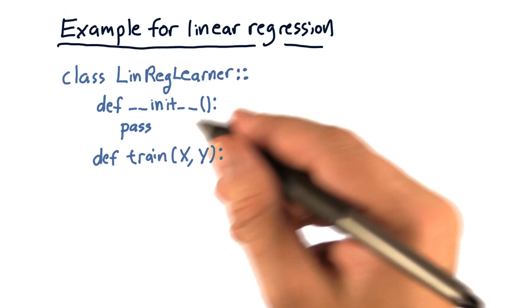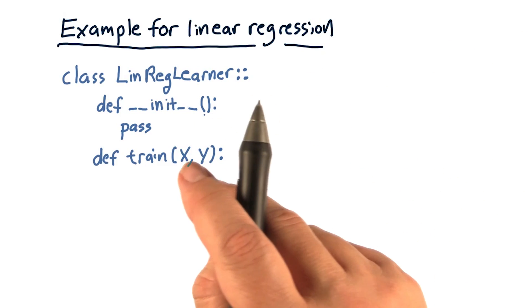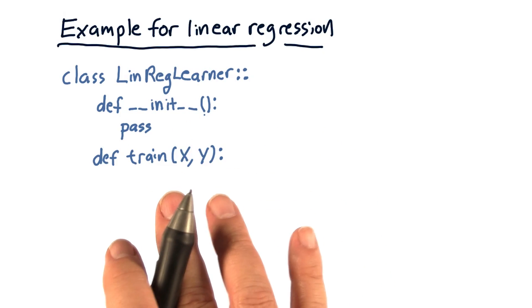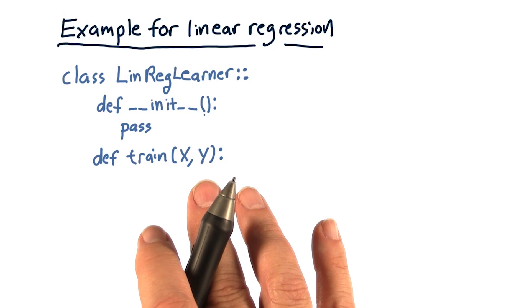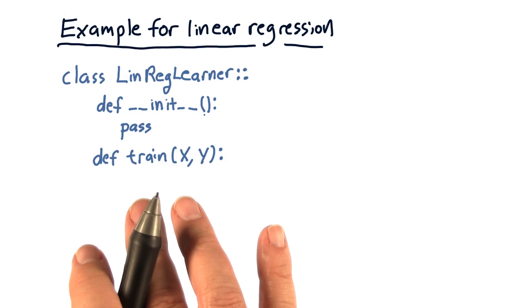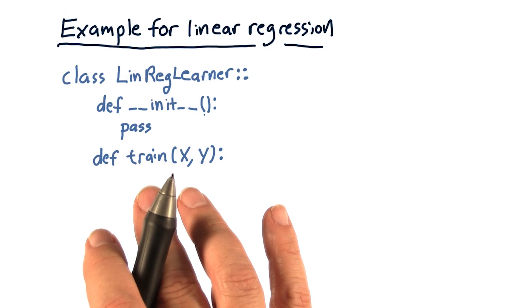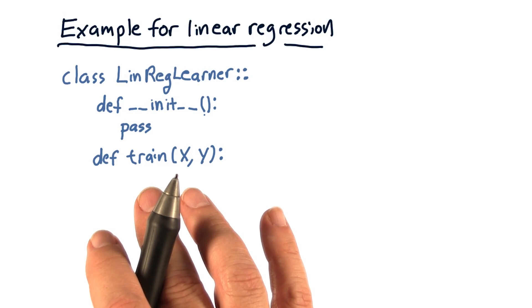Our training method takes an x and a y. And remember, x can be multidimensional. And what it's doing, it should take this x data and this y data and fit a line to it. So it's trying to find an m and a b. So the job of the train method is to find that linear equation, or the parameters for that linear equation, m and b.